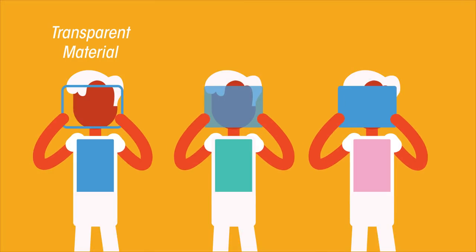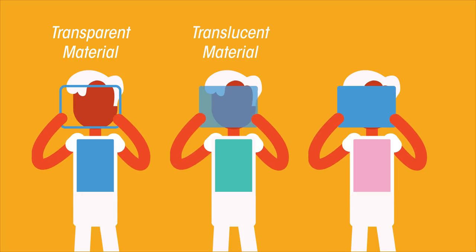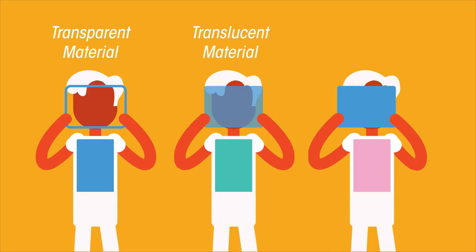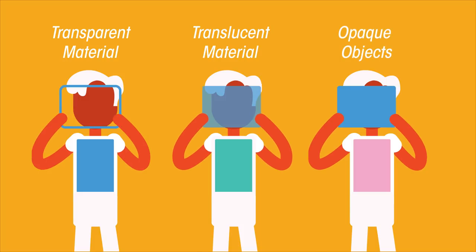Transparent materials allow light to pass through them. Translucent materials allow some light through but not all. And opaque objects don't let any light pass through them and so they cause shadows.